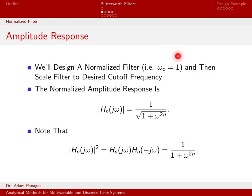If you return to the equation for the amplitude response, the quantity ω over ω_c — now that ω_c is equal to 1 — just turns into ω. So in terms of the amplitude response of our normalized filter, it is 1 over the square root of 1 plus ω raised to the 2n.